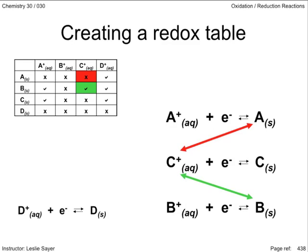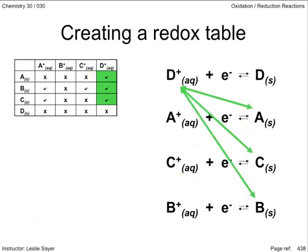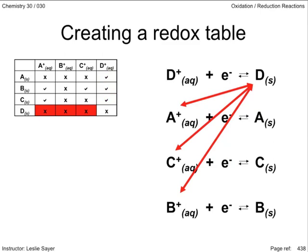So where does the D equation go? The D ion reacts with everything except its own ion. It gains electrons from all the metals. Therefore, it's the strongest oxidizing agent and sits at the top left of the table. Therefore, the D ion reacts with all metals, and the D metal does not react with anything.